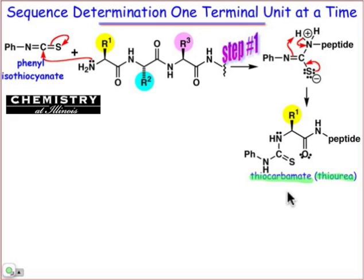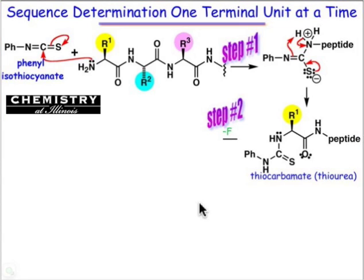What we see now is the completion of step one of this repetitive process. At this point, the reaction conditions would be changed to acidic conditions often by the addition of HF.